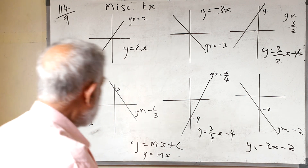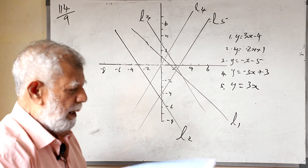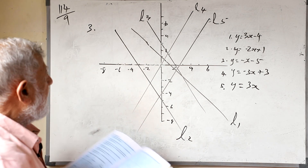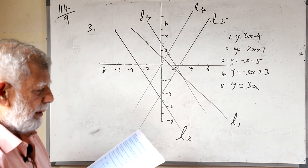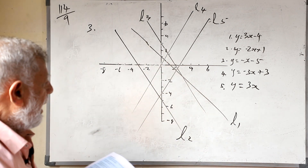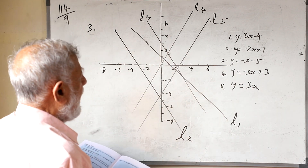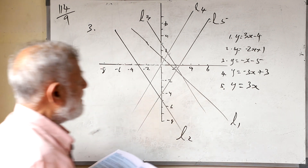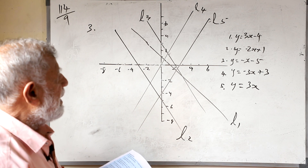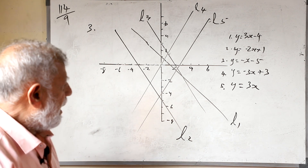Now we will go to the next one. Children, if you look at the exercise in your textbook, we are going to question number 3. They have given a diagram with 5 graphs, named L1, L2, L3, L4, and L5, along with the equations of the graphs. We have to identify the lines by looking at the graph and the equation.